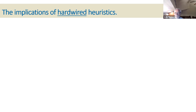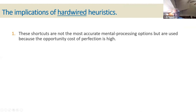What are the implications of hardwired heuristics? A heuristic is a thinking shortcut. Hardwired means this is in your brain — in the older part of your brain — it's hardwired in there. These shortcuts are not the most accurate mental processing options, but are used because the opportunity cost of perfection is very high — you're giving up too much. So you rely upon these quick shortcuts or heuristics.